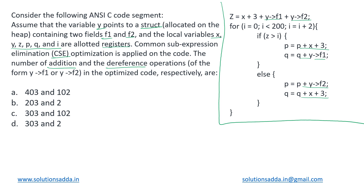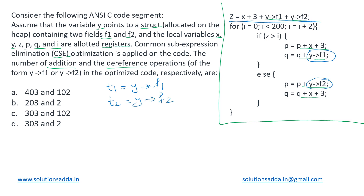We can optimize this code by introducing temporary variables. We set t1 = y→f1, so every occurrence of y→f1 can be replaced with t1. Since this value is not manipulated further, calculating it once and storing it allows reuse multiple times without repeating the dereference operation. Similarly, we store t2 = y→f2. We also notice that x+3 appears redundantly in two places, so we store that in t3.